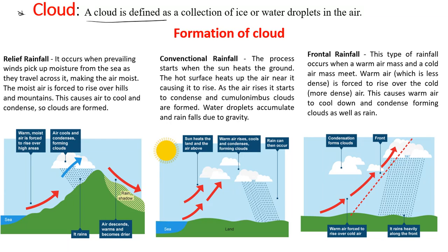A cloud is defined as a collection of ice or water droplets in the air. Now, how is cloud formed? In the formation of cloud, we're going to look at the major three types of rainfall, which are the major reasons why there are different types of cloud.